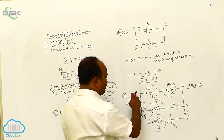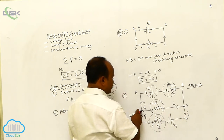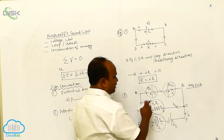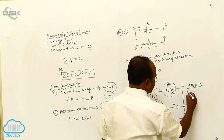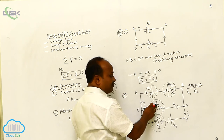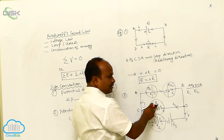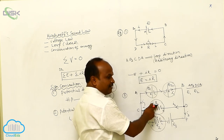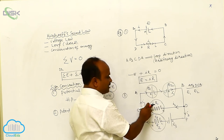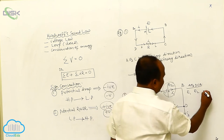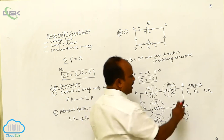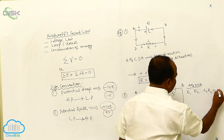In this closed loop A-B-D-C-A, there are two cells: E1 and E2. There is only one resistor and only one branch. The potential difference is I2 times R1. According to Kirchhoff's second law, the algebraic sum of all potential differences equals zero.